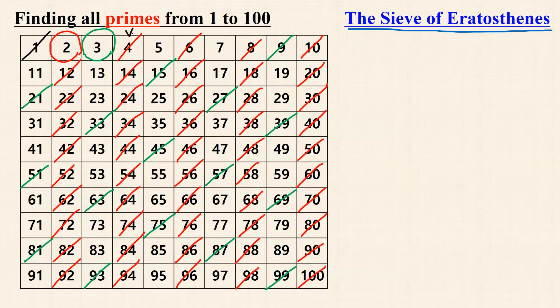Next is 4, but all multiples of 4 are already deleted. Since 4 is 2 times 2, so they are also the multiples of 2. So we can just skip 4.